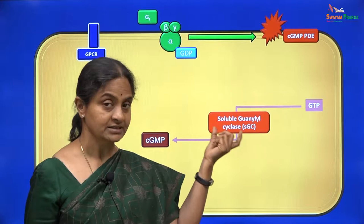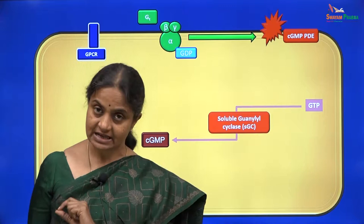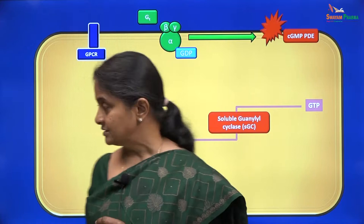It has the adjective 'soluble.' Since it has an adjective, you must realize there must be another guanylyl cyclase — and of course that one is on the membrane — but that is not the G protein coupled enzyme here. We will discuss that a little later. Here we have soluble guanylyl cyclase, which will increase cGMP levels within the cell.